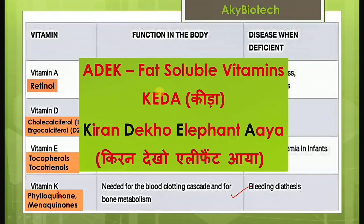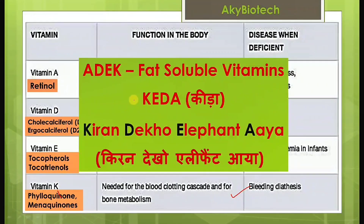Here is an easy mnemonic to remember the fat-soluble vitamins — that is vitamins A, D, E, and K. We pick up the first alphabet of each and remember them together as ADEK.